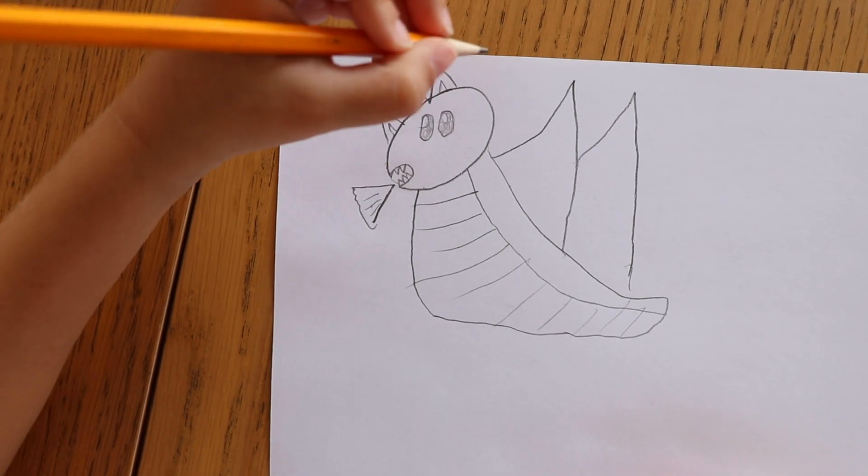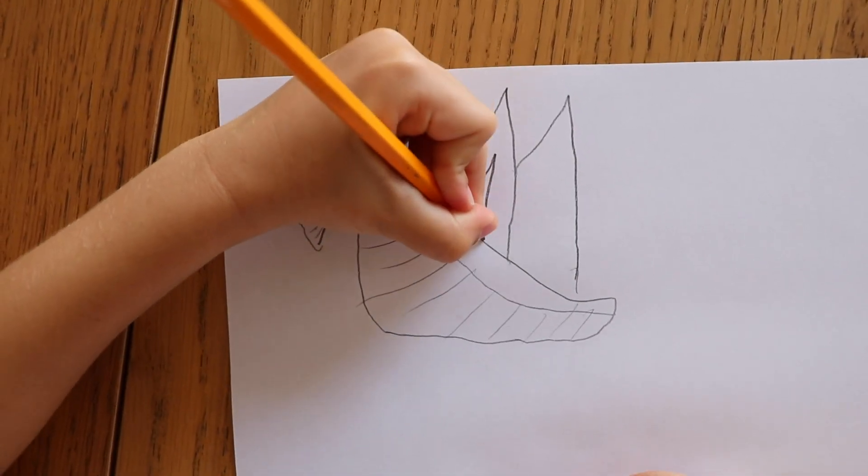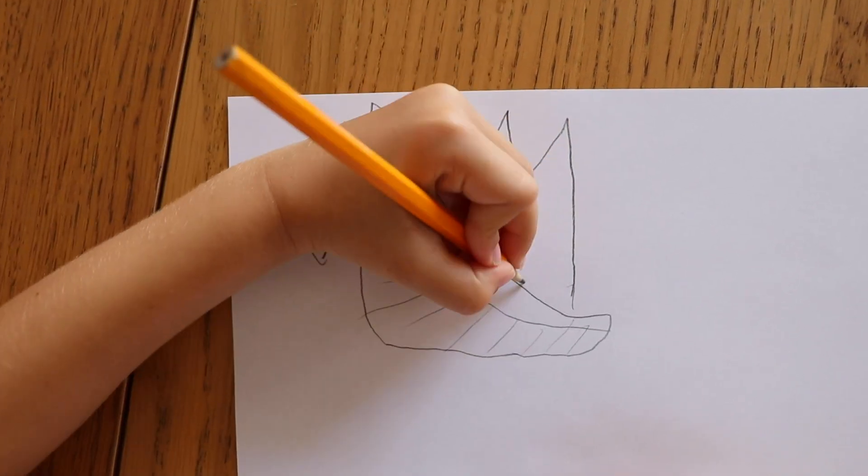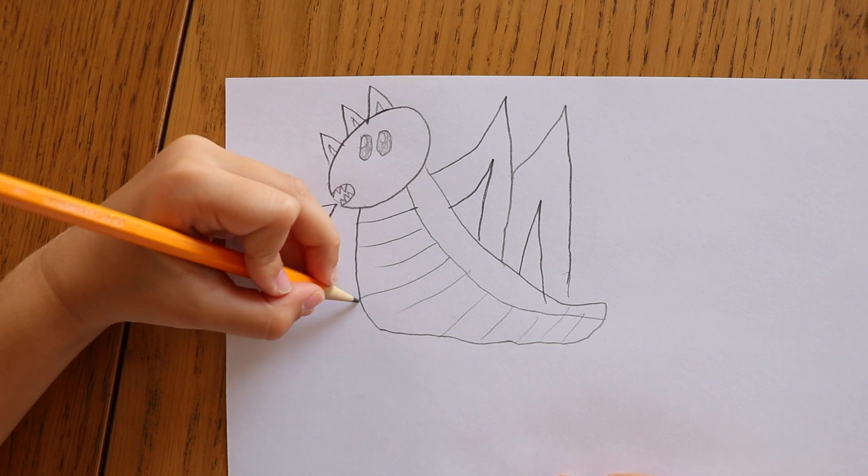And inside draw a triangle. Like the spikes we draw. And draw folds like this.